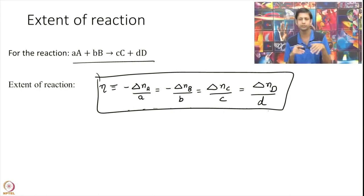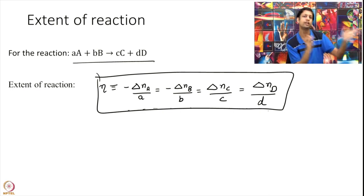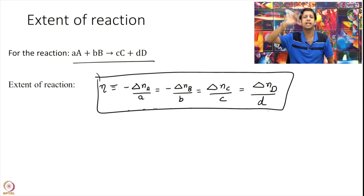If this is true the whole thing we do not want to write again and again and we call it the extent of the reaction. And the idea is if delta N A equal to 0, then the extent is 0. That means nothing has happened. You are at t equal to 0. And if delta N A is a, then eta is 1.